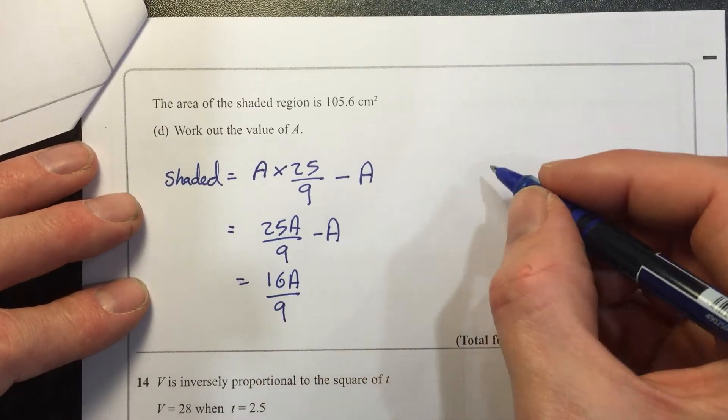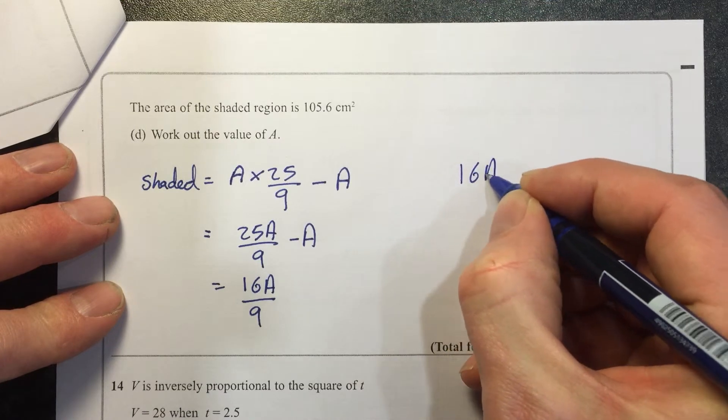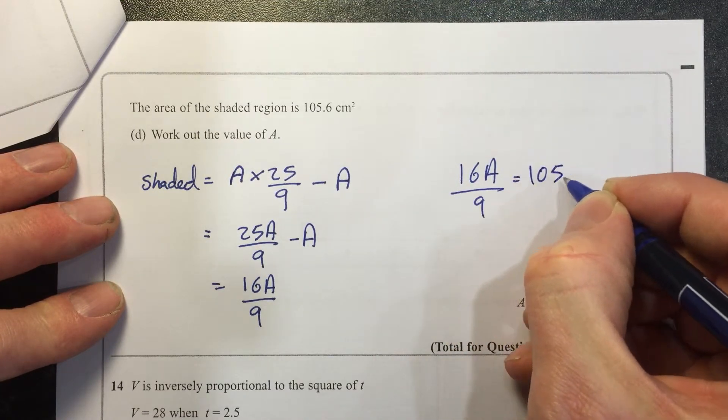And I'm told that 16A over 9 equals 105.6.